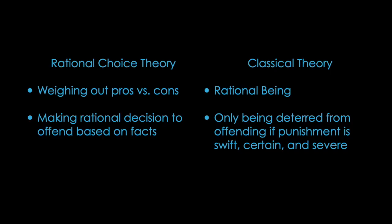Rational choice theory is similar to classical theory in that both state that individuals are rational beings choosing whether or not to commit crimes. But with rational choice theory, they're weighing out the pros and cons and deciding whether committing the crime is a good risk. With classical theory, individuals are rational beings who are only deterred from committing crimes if the punishment is swift, certain, and severe. So for classical theory it's the punishment that deters them, and with rational choice it's pros versus cons — benefit versus risk. If the risk is too high, they'll make a rational decision not to go through with it.